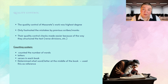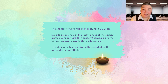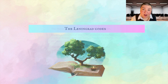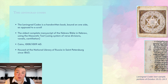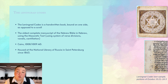The Masoretic work enjoyed an absolute monopoly for 600 years, and experts have been astonished at the faithfulness of the earliest printed versions — late 15th century — compared to the earliest surviving codices from the late 9th century. The Masoretic text is universally accepted as the authentic Hebrew Bible, which leads us to the Leningrad Codex. The Leningrad Codex is a handwritten book bound on one side, as opposed to a scroll — it is the oldest complete manuscript of the Hebrew Bible in Hebrew, using the Masoretic text with its system of verse divisions, vowels, and cantillation. According to the statement in the book itself, it was made in Cairo during 1008 or 1009 AD, and has been housed at the National Library of Russia in St. Petersburg since 1863.